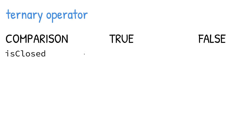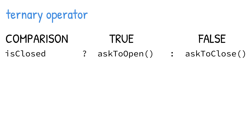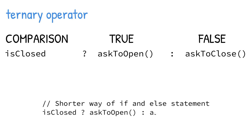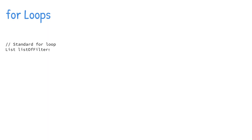The ternary operator takes three arguments and is usually used when only two actions are needed. It checks the first argument for comparison, the second is the action if the argument is true, and the third is the action if the argument is false.